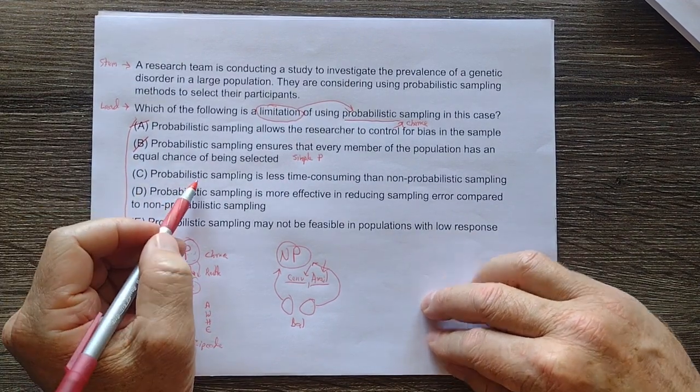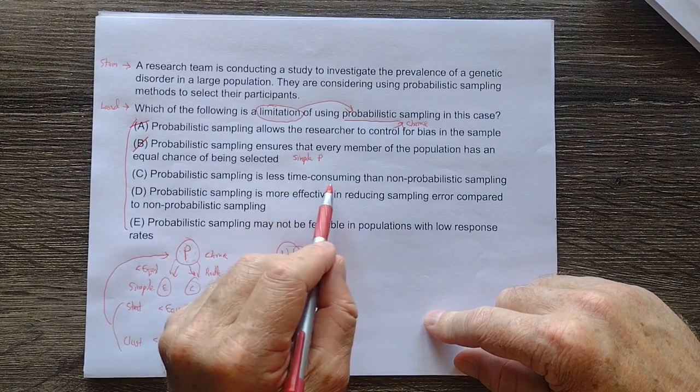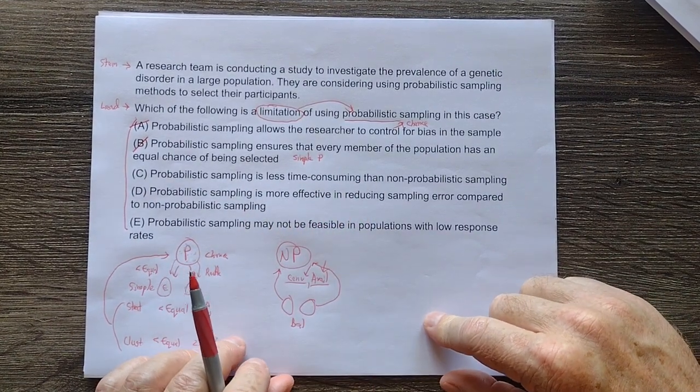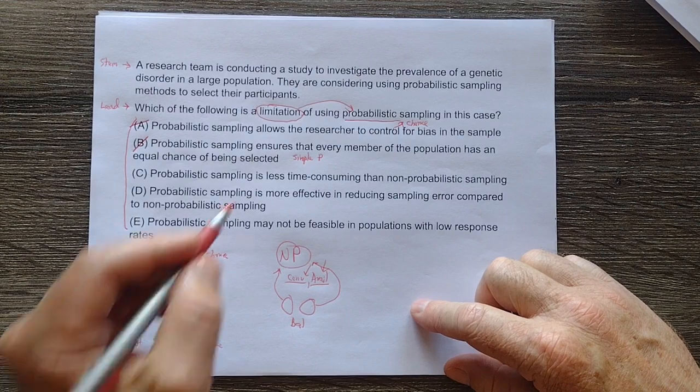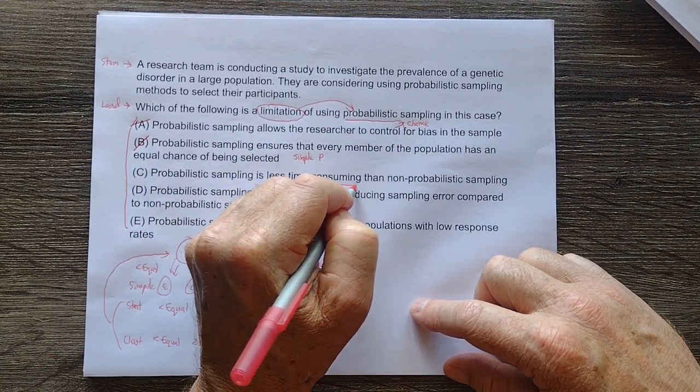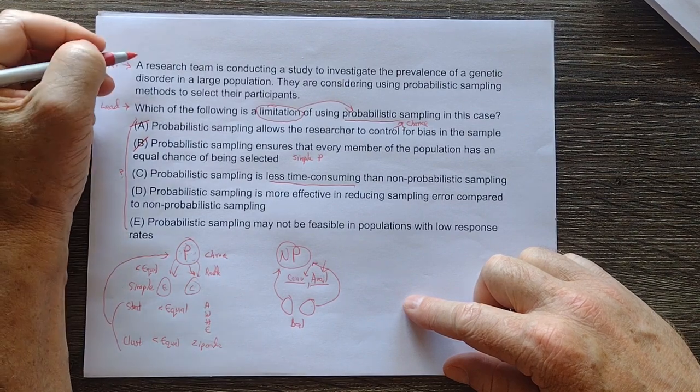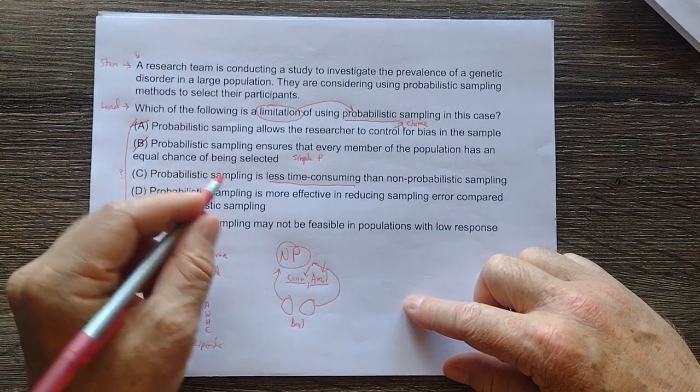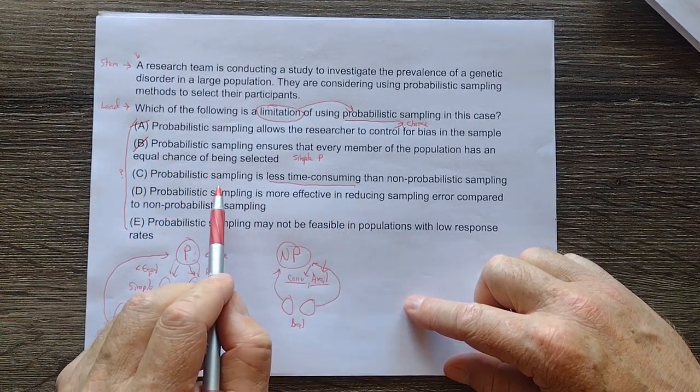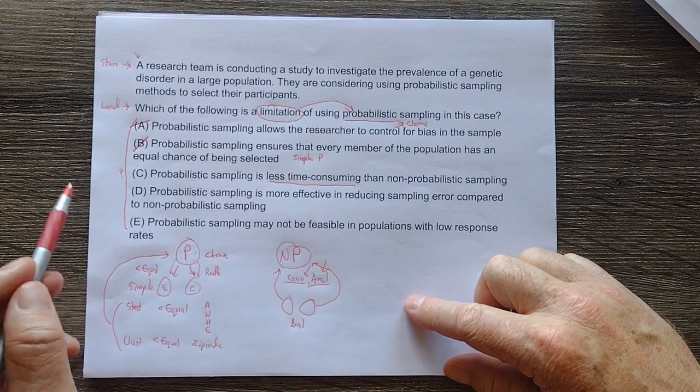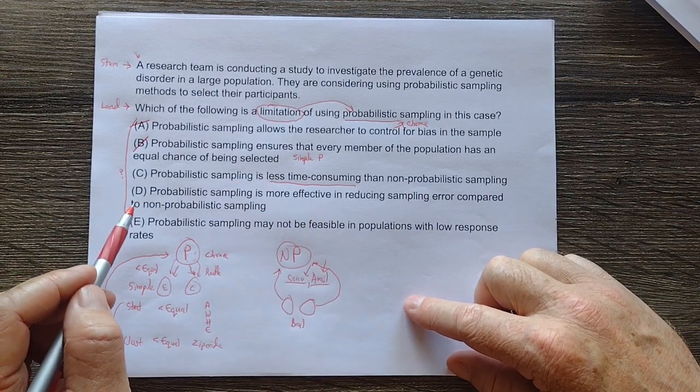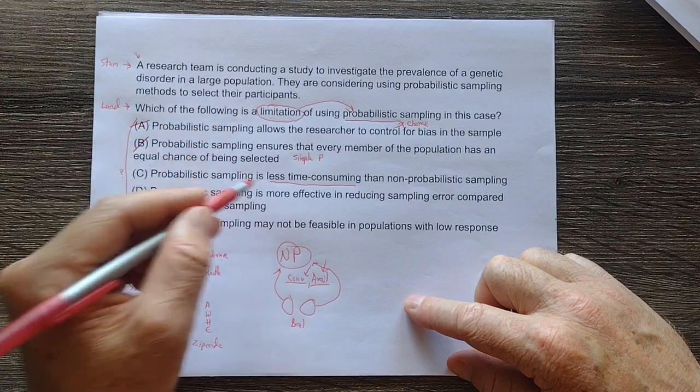All right. So probabilistic sampling is less time consuming. It depends. There's a lot of factors that go into time consuming. So we would need to come up here and then look at what the question stem says. So I'm not going to rule that one out. But that doesn't sound completely correct. And is it a limitation? I don't know.